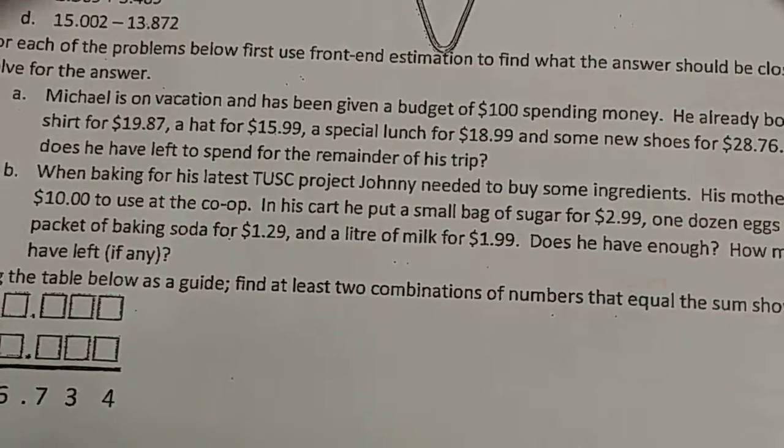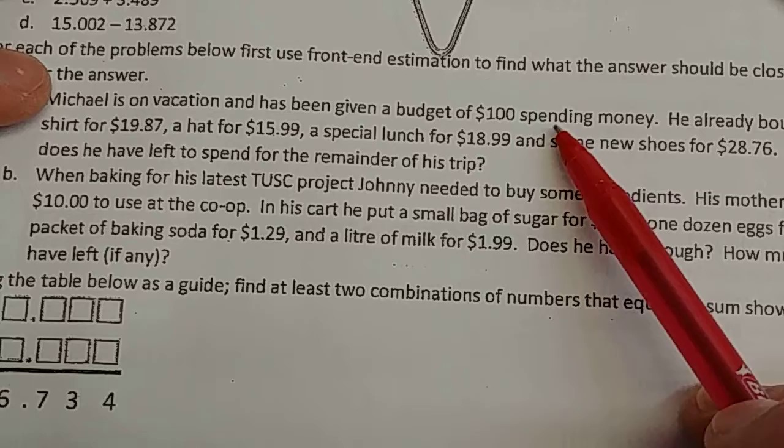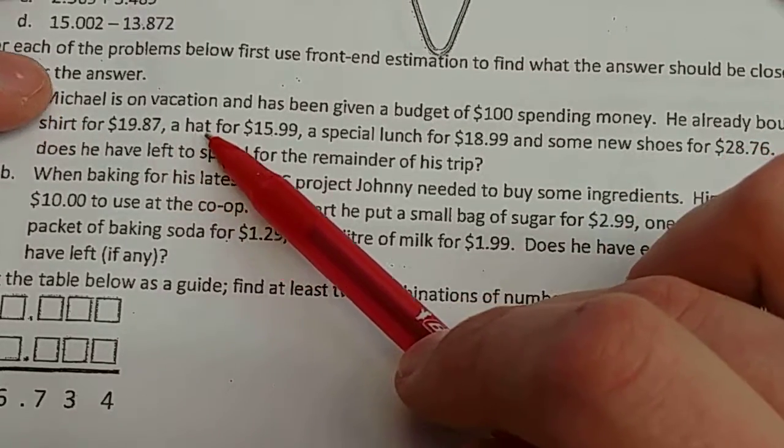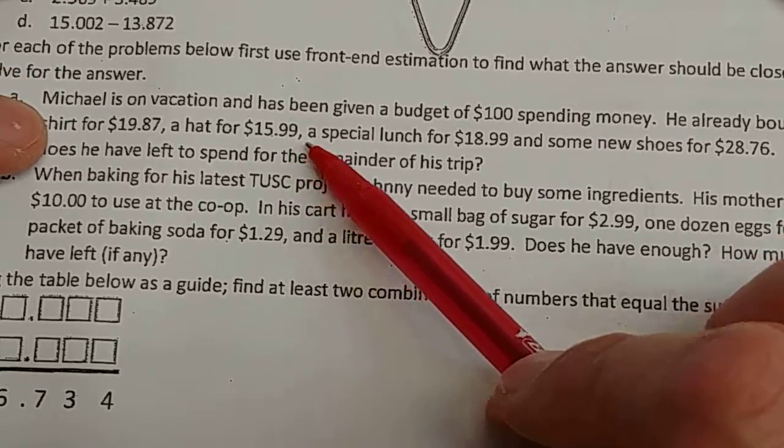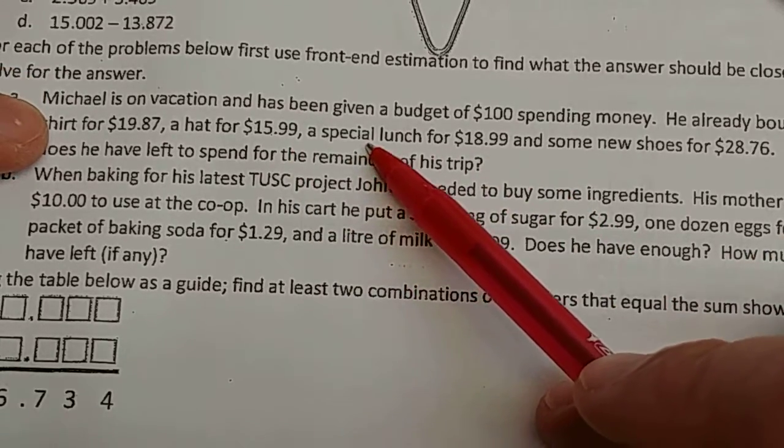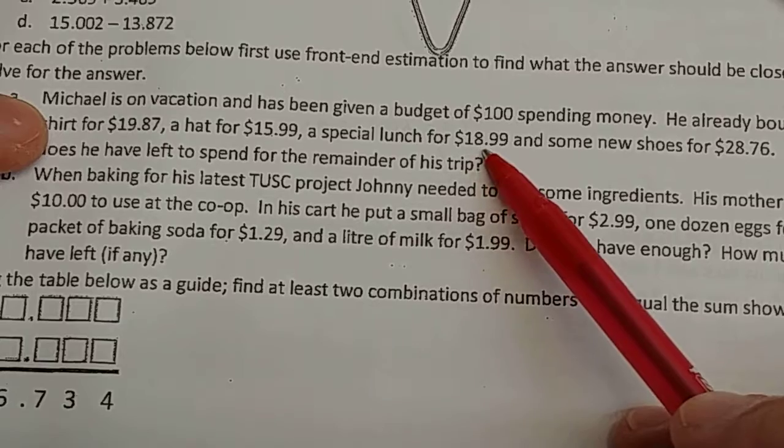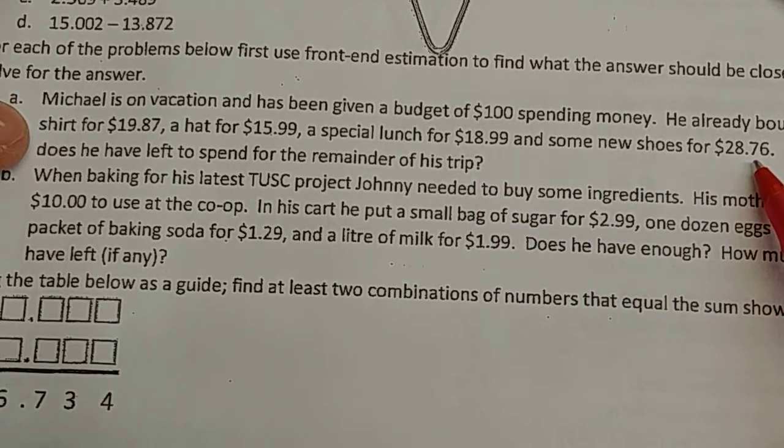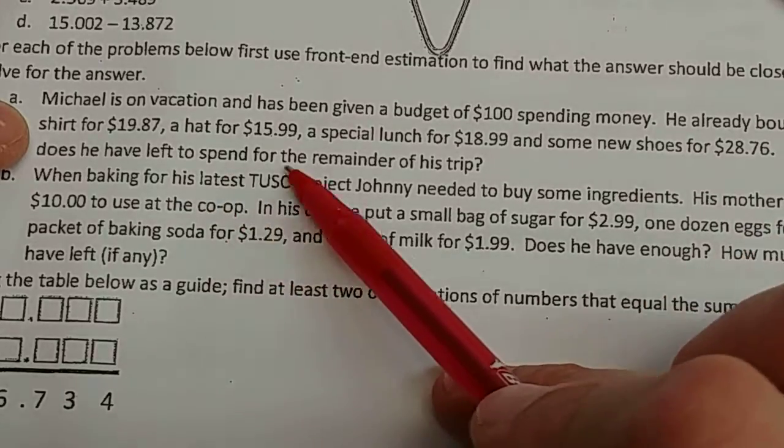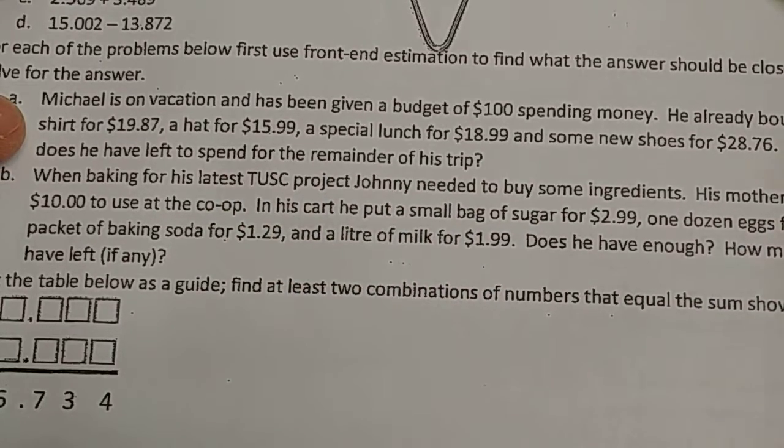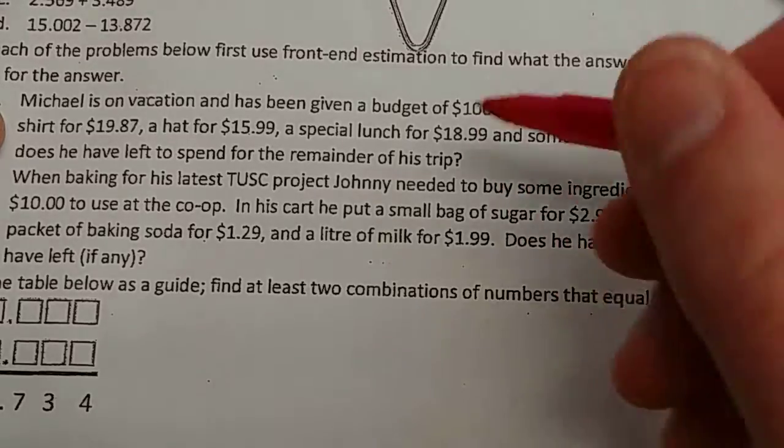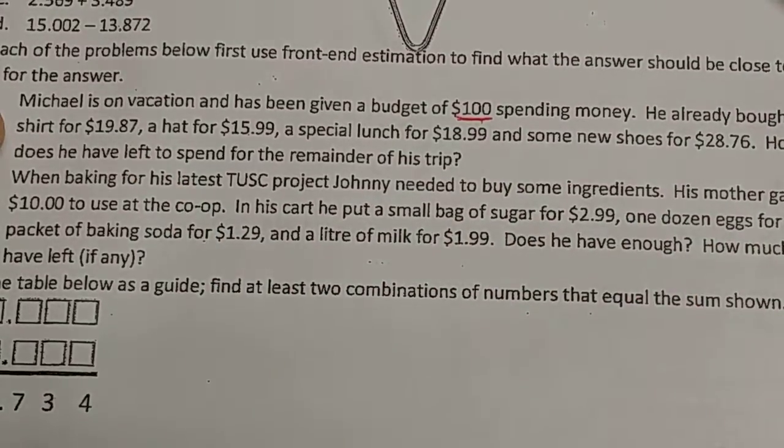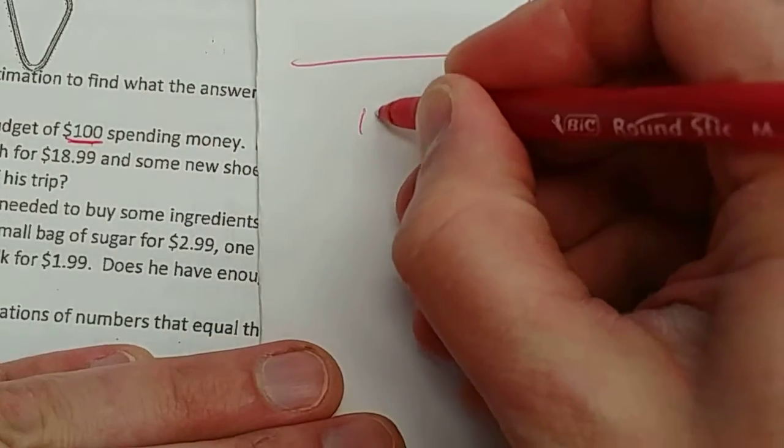It says, Michael is on vacation, has been given a budget of $100 spending money. He bought a t-shirt for $19.87, a hat for $15.99, a lunch for $18.99, a special lunch. He must have gone for the buffet. I don't know. That's pretty expensive. And some new shoes for $28.76. How much does he have left to spend for the remainder of his trip? Well, first it says that we're doing an estimate. I see is $100.